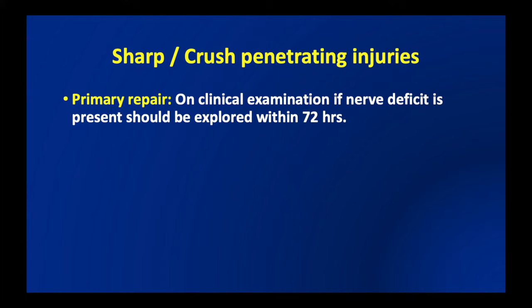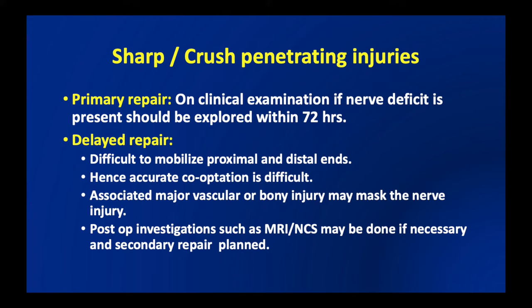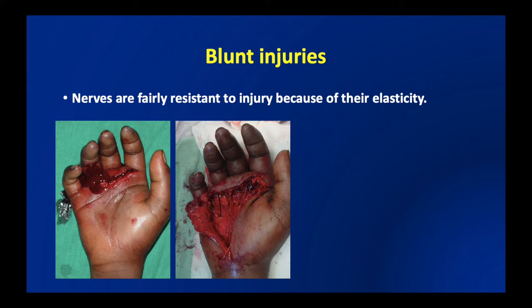If it has been a sharp or crush penetrating injury and on clinical examination there is a nerve deficit, it should be explored within 72 hours and primary repair planned. If there is a delayed presentation, it will be difficult to mobilize the proximal and distal ends, and accurate coaptation may be difficult. There may be associated major vascular or bony injury which may mask the nerve injury clinically, and post-operative investigations such as MRI or nerve conduction studies may be done if necessary.